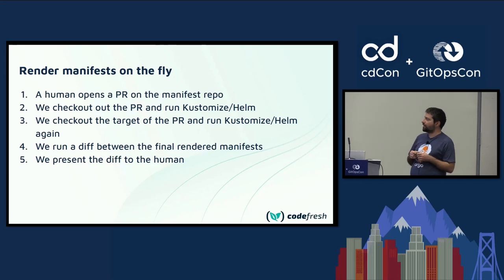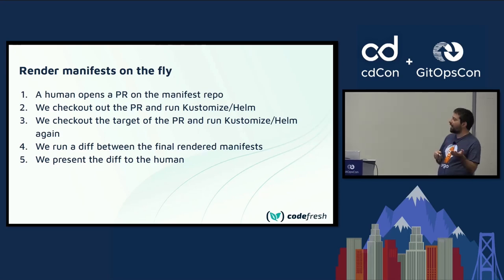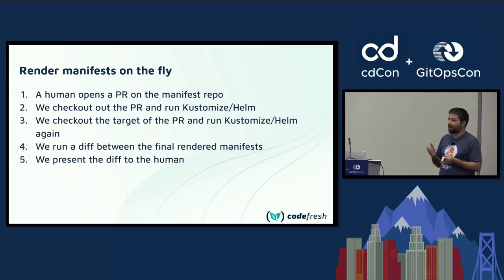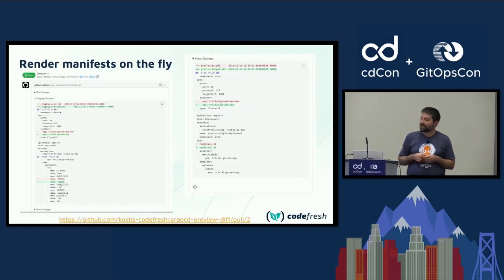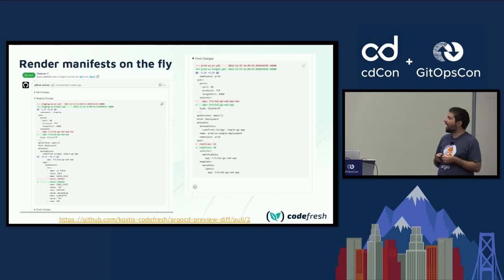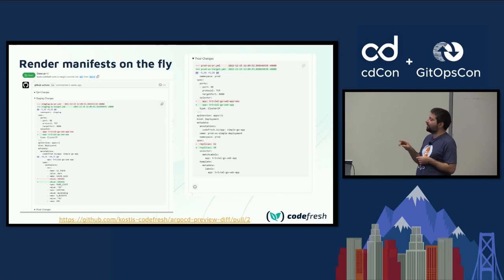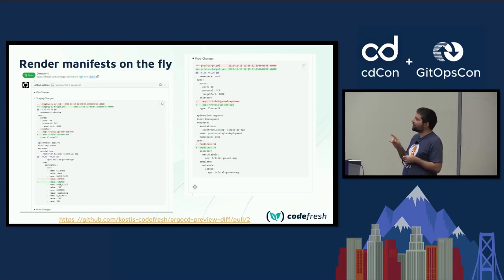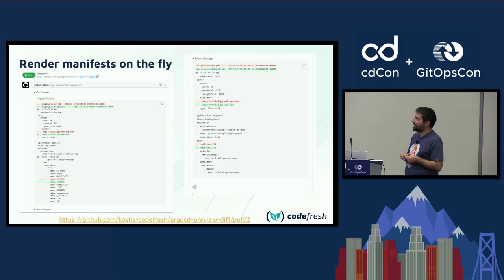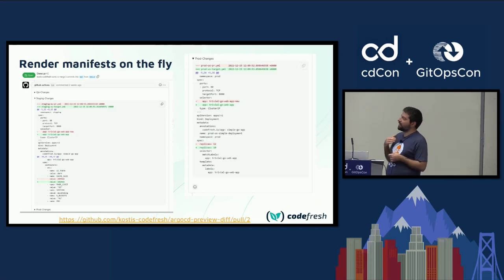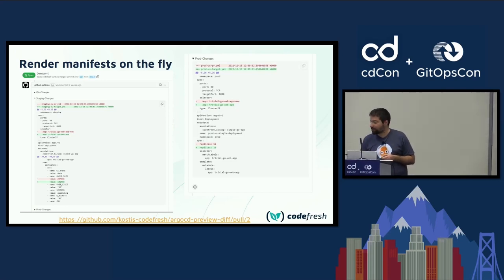In any CI system, it's super easy to get the files of the pull request, the files that are in the main branch or the target of the pull request, and then perform a diff and attach this to the issue. This is a live example — I'm looking at the pull request and this is a comment on the pull request. Unlike the first example, this comment has final rendered manifests and I can see exactly what has changed.